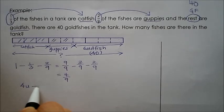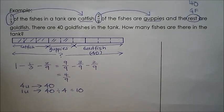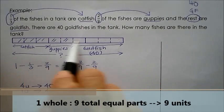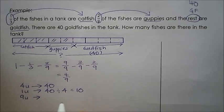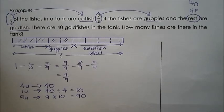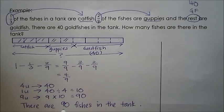Now I know that four units is actually 40 goldfish. So with that, I can find one unit: 40 divided by 4 equals 10. So one unit equals 10. How many fishes are there in the tank? I want to find the total. The total number of units is nine, so nine units is nine times 10, which equals 90. My answer is there are 90 fishes in the tank.